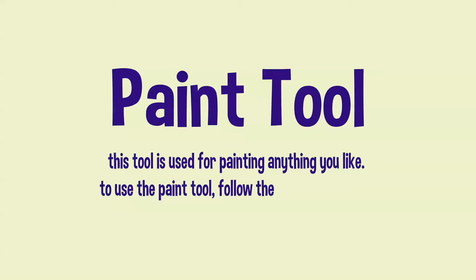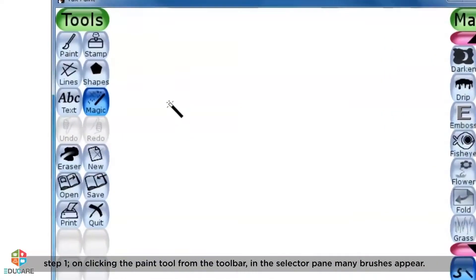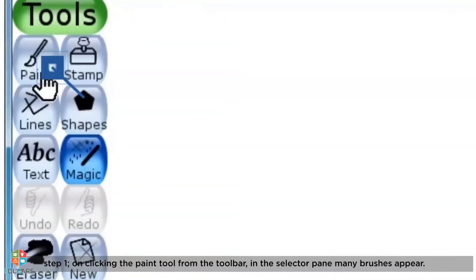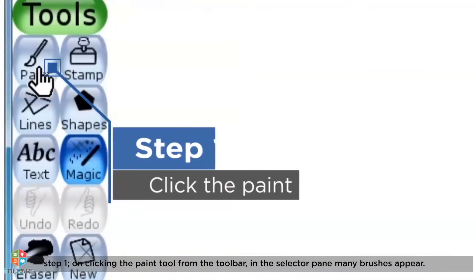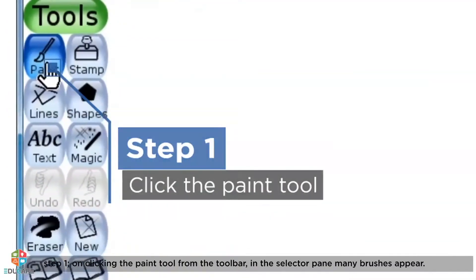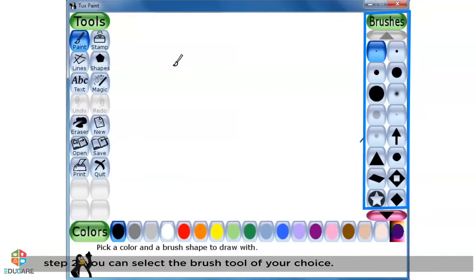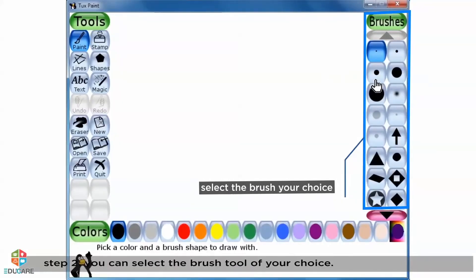To use the Paint Tool, follow the steps given below. Step 1: On clicking the Paint Tool from the toolbar, in the selector pane, many brushes appear. Step 2: You can select the brush tool of your choice.